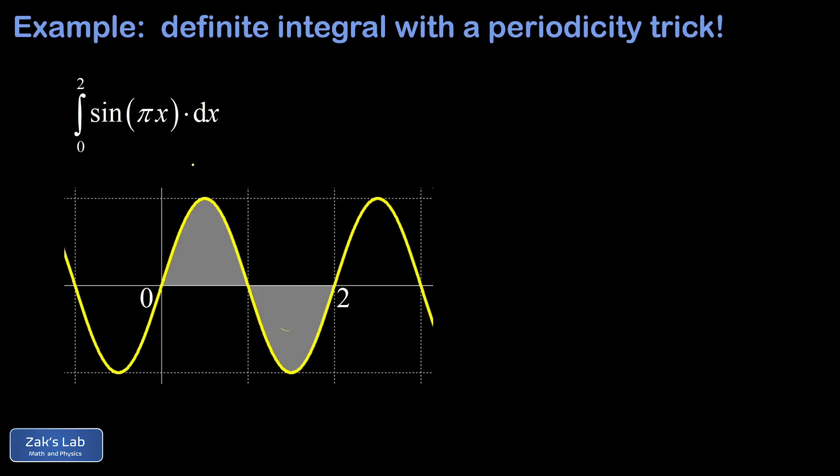Well, this sinusoidal function, sine pi x, happens to have a period of exactly 2. That's 2 pi divided by the coefficient of x. So when we look at a graph of it, and we shade in the area corresponding to the integral, we get this perfect cancellation and the integral vanishes.